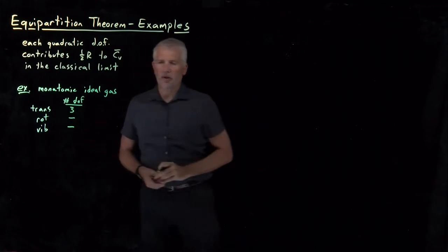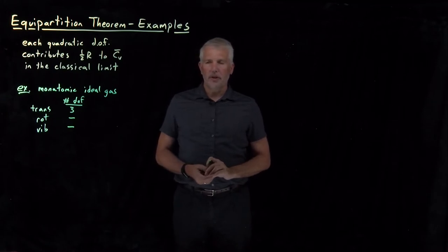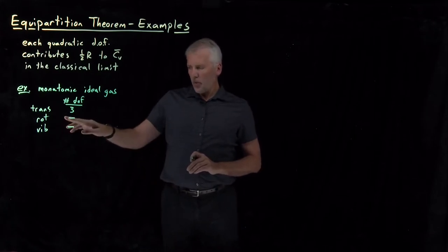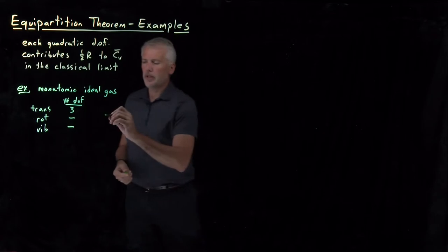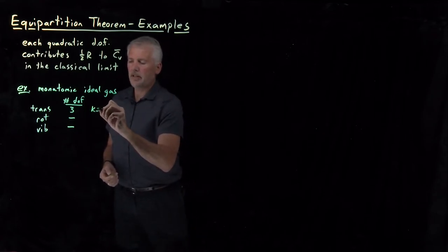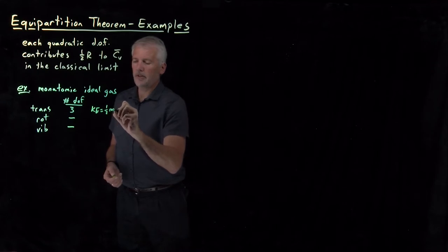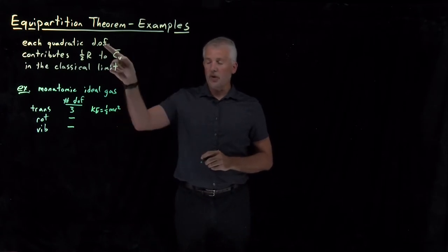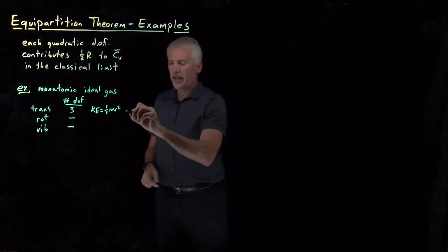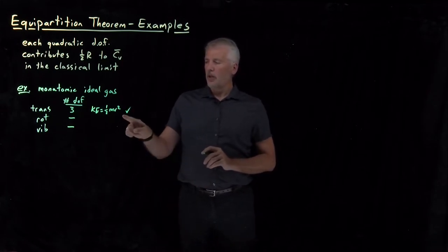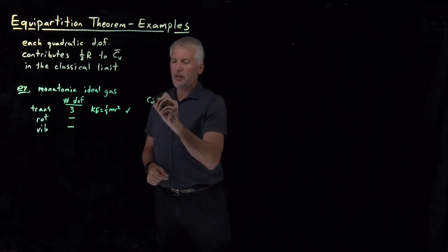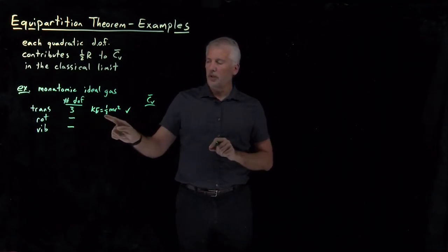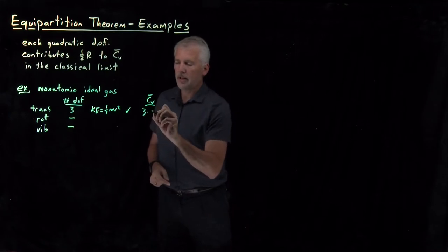It's not allowed to rotate and not allowed to vibrate, so there are no rotational or vibrational degrees of freedom. The translational energy of the molecule has a kinetic energy of one-half mv squared. Since velocity shows up as something squared, that is indeed a quadratic degree of freedom. There are three of these degrees of freedom — the x, y, and z coordinates — each of which is quadratic, so that contributes three times one-half R.